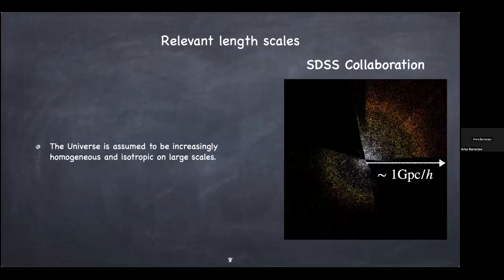Before going further, it's useful to remind ourselves of a few relevant length scales. This is a picture from the SDSS collaboration — a cosmological survey that started about 20 years ago. Every dot you see is actually a galaxy whose spectrum has been measured. We are the observer sitting somewhere here, and this distance is about one gigaparsec — 10^9 parsecs.